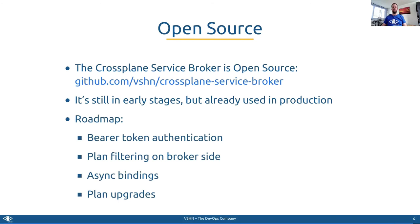We have some points on the roadmap already. The first thing we will do is implement authentication with bearer token, which could contain meta information — for example, for access control or for filtering plans available to a particular user or team, whatever information is stored in the token. This will also allow us to implement plan filtering on the broker side. We will also implement asynchronous binding operations. And last but not least, we have plan upgrades on our plate, so that we can upgrade from small to medium plans and so on. We'll work on these features over the next weeks and months, with some depending on upcoming features in Crossplane.